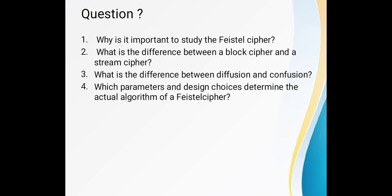We have understood the concept of block cipher principles, the difference between block cipher and stream cipher, and the Feistel cipher. Some questions to solve: What is the importance of studying the Feistel structure? What is the difference between block cipher and stream cipher? What is the difference between diffusion and confusion? Which parameters and design choices determine the actual algorithm of the Feistel cipher? Please solve all these questions. Thank you.